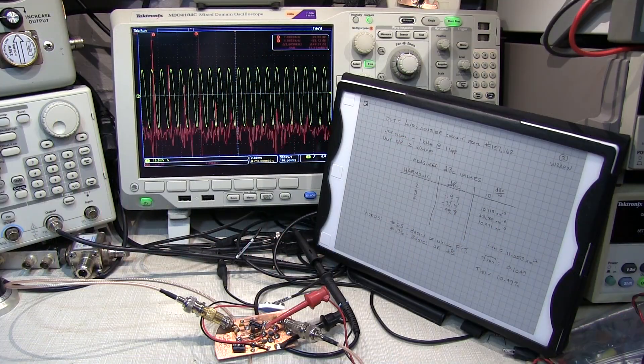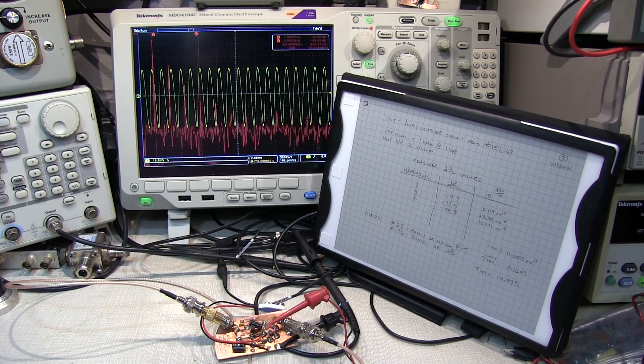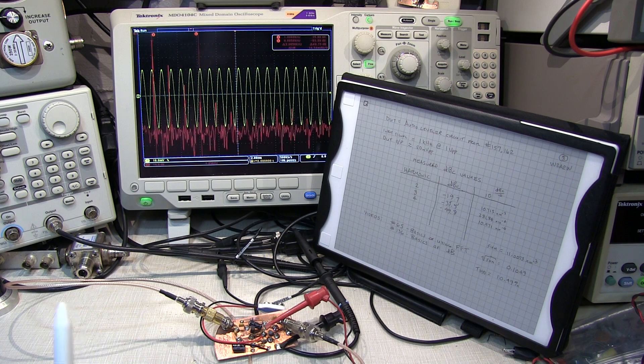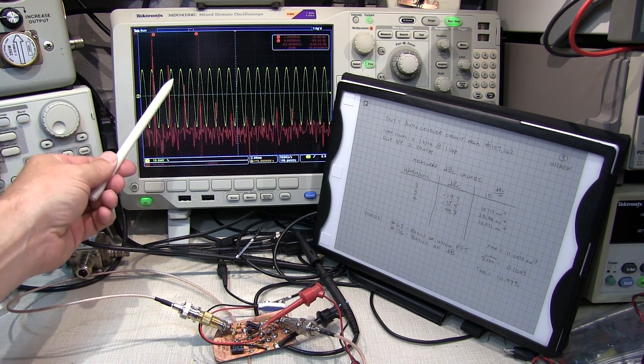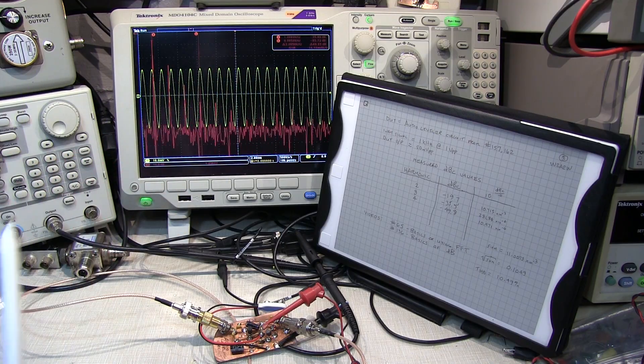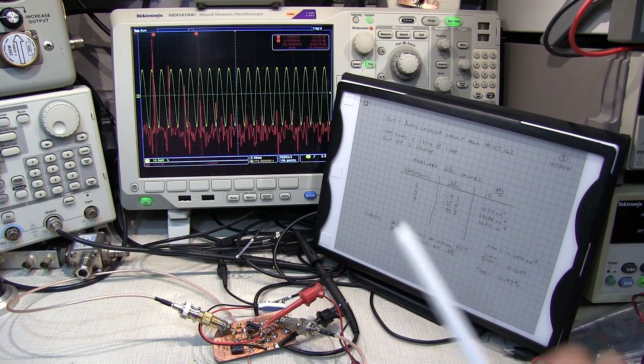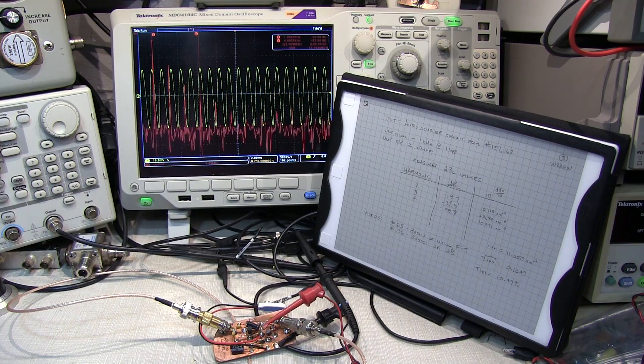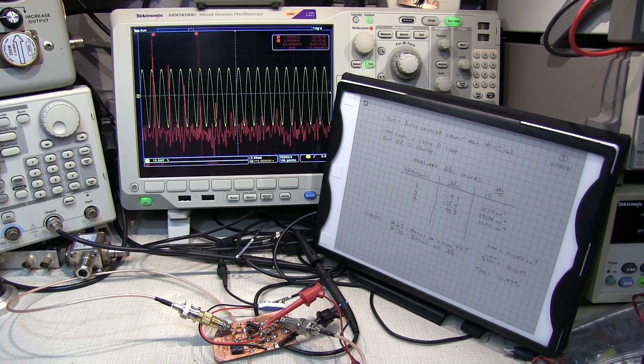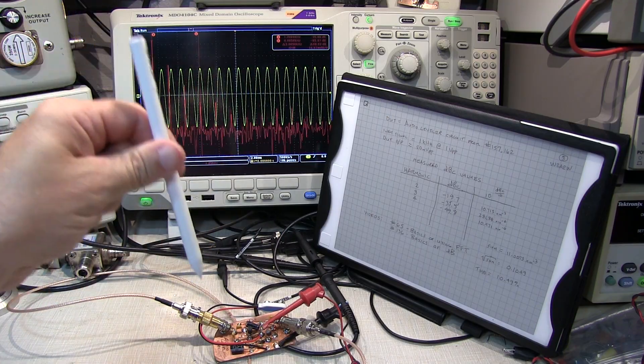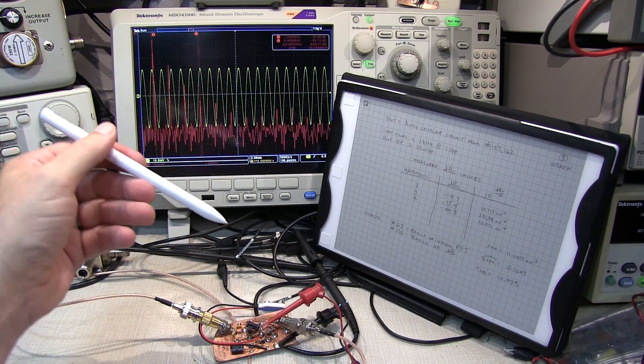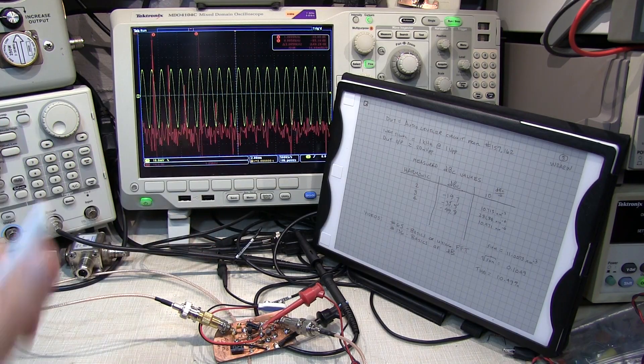I hope you've found today's short video interesting and useful and now know how to use the oscilloscope's FFT function to make some relative dBc measurements on a signal and then be able to compute the total harmonic distortion from those measurements. As always, the links to the videos that I've mentioned during today's video will be linked down below, as well as a link to a PDF copy of my notes.